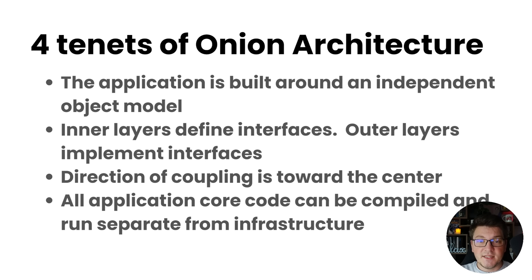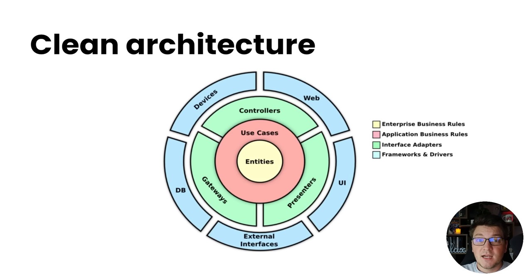The fourth tenet is that all application core code can be compiled and run separate from the infrastructure. This part is debatable because you can't run the application core without the implementations, but you can compile it because you're depending on the interfaces. Now let's take a look at the clean architecture and see how it compares. Clean architecture was created in 2012 by Robert C. Martin, also known as Uncle Bob.